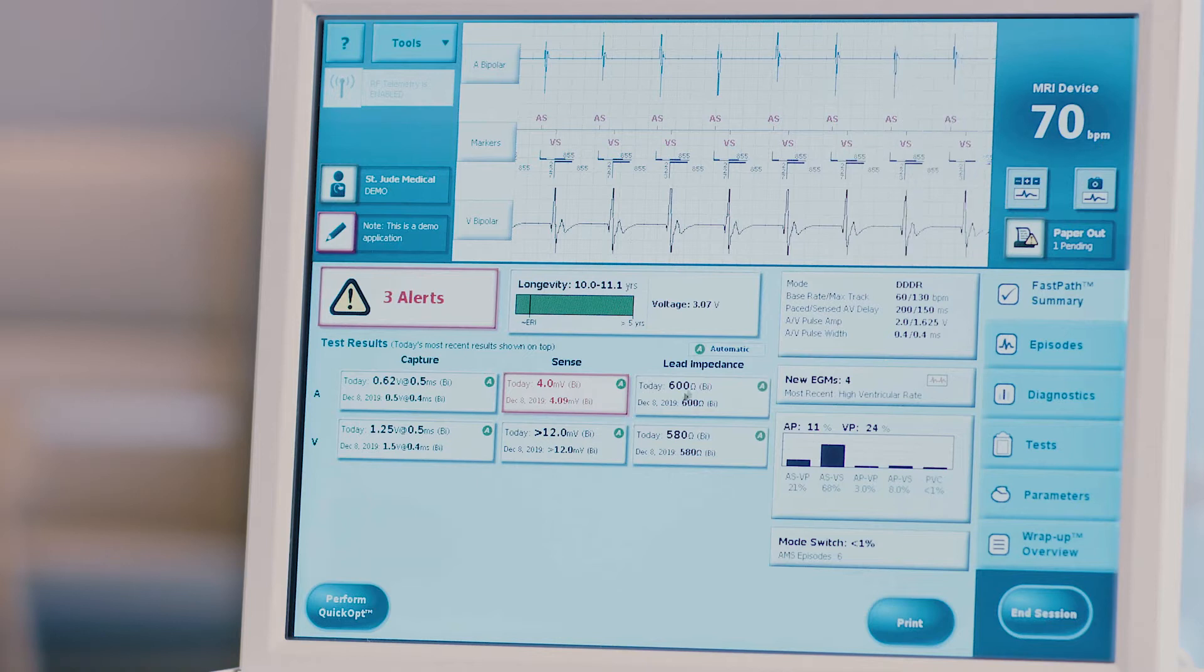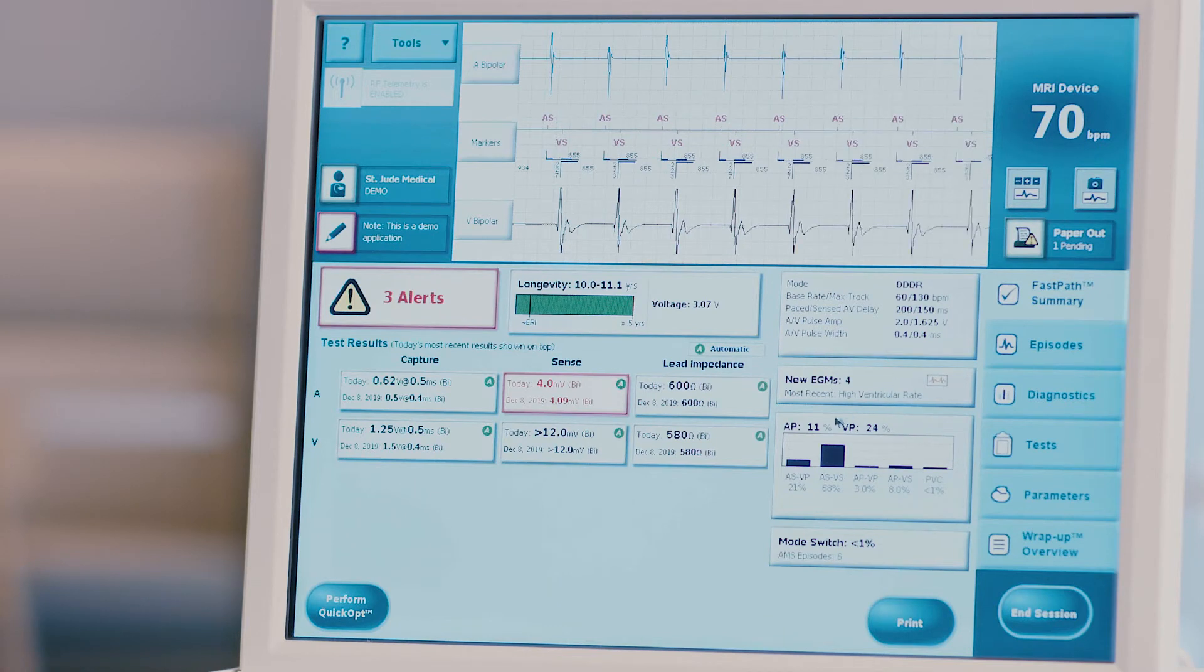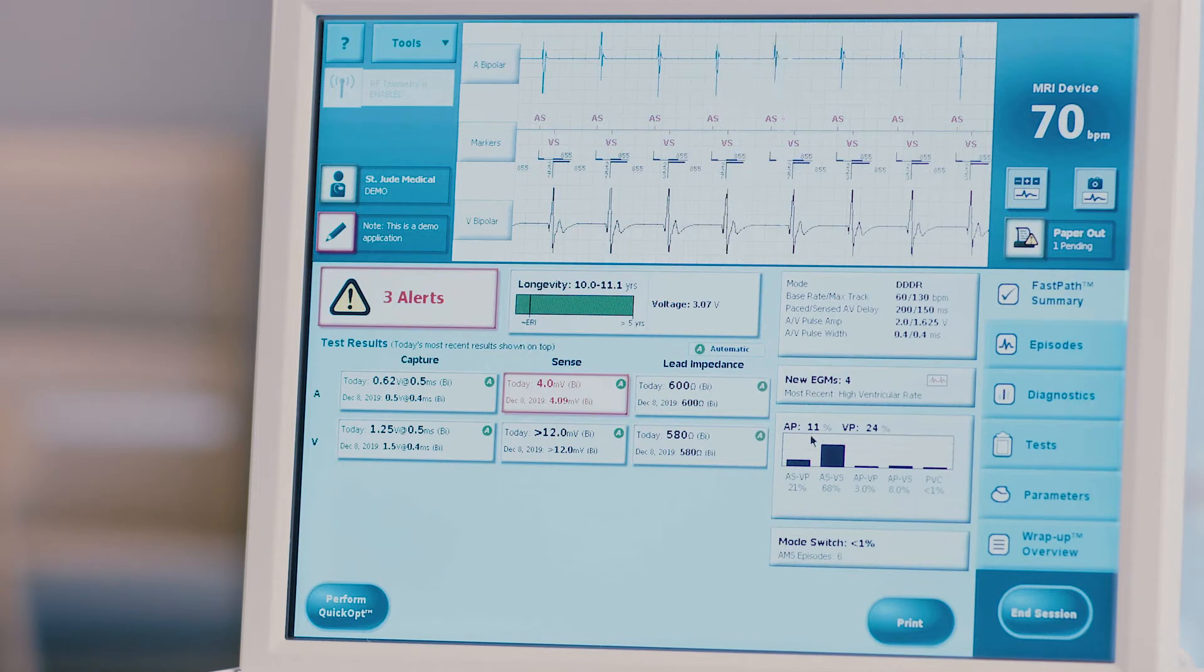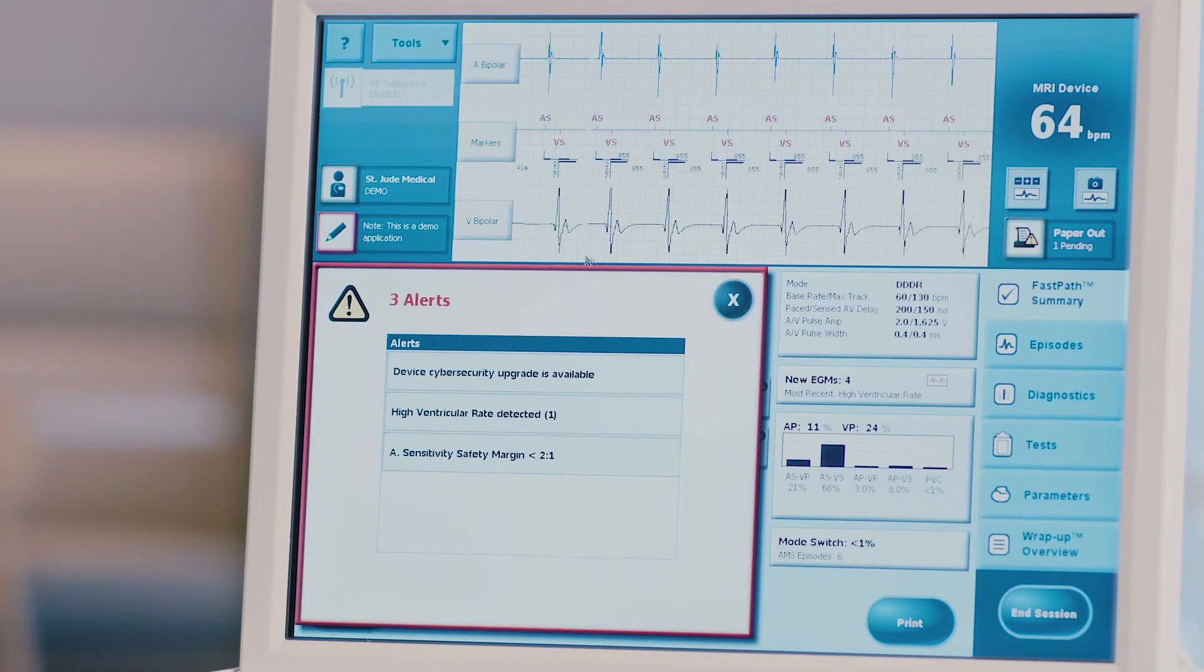Assess the program parameters including mode, base rate, and program pacing outputs. Assess pacing percentages and AMS, auto mode switch percentages, and episode counts. Assess alerts, if any, by clicking on the red alerts box on the left-hand side of the screen.